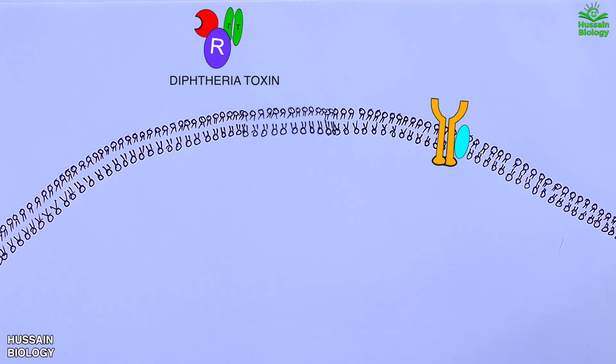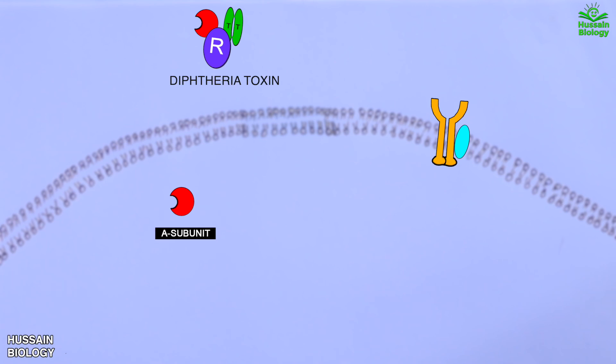The diphtheria toxin secreted by Corynebacterium diphtheriae has two subunits: A subunit and B subunit. The A subunit contains the C domain, and the B subunit contains the T domain and R domain. The diphtheria toxin binds with the HB-EGF receptor, and it is the R domain of the toxin that binds with the receptor.